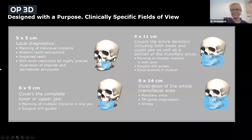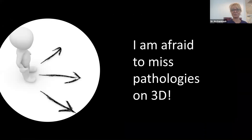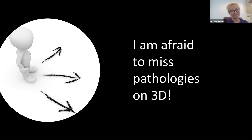With OP3D, you have the amazing feature of choosing different fields of view for different applications. Another common concern is fear of missing pathology. As we've already seen in this presentation, radiolucencies at the apex of teeth might look like dental abscesses, granulomas, or cysts — and you need histology to differentiate the three. But sometimes they can be KOTs. We saw two already.